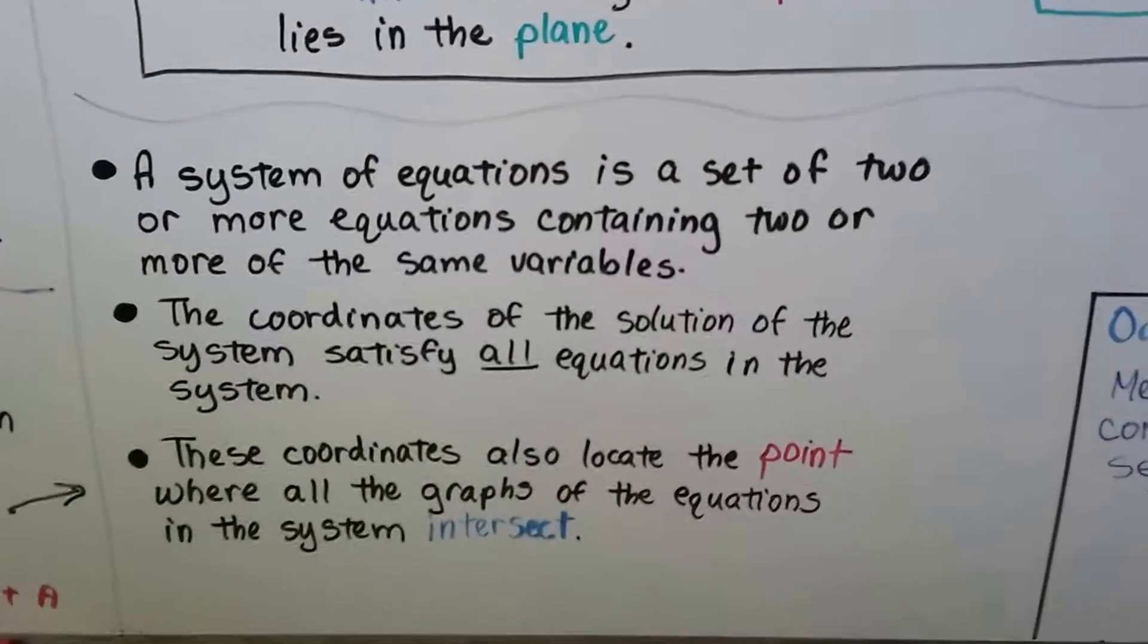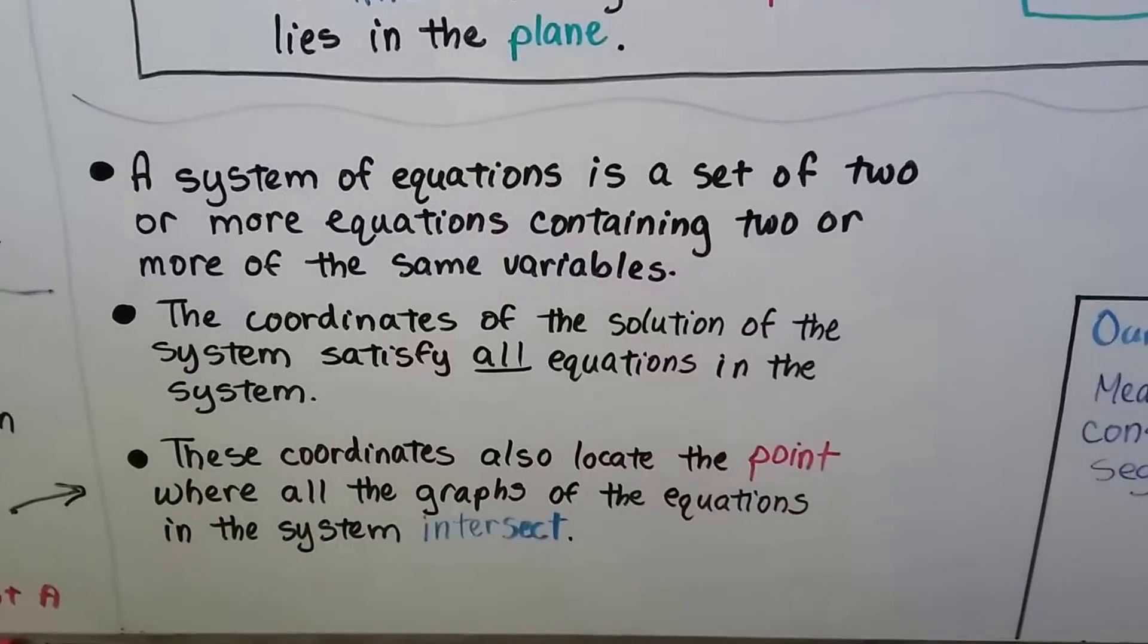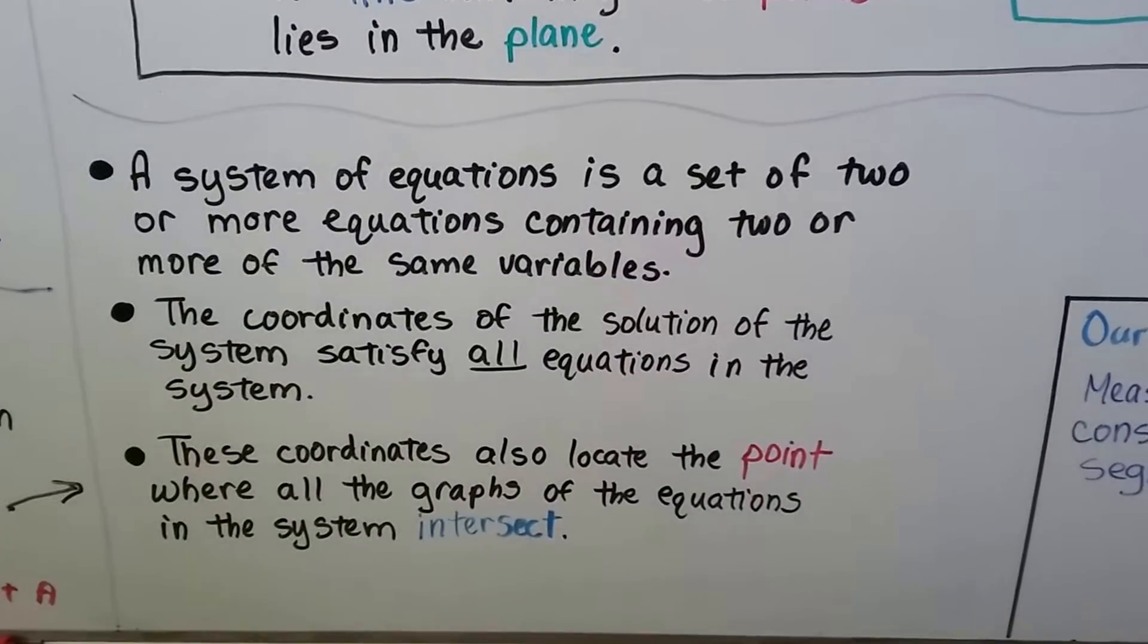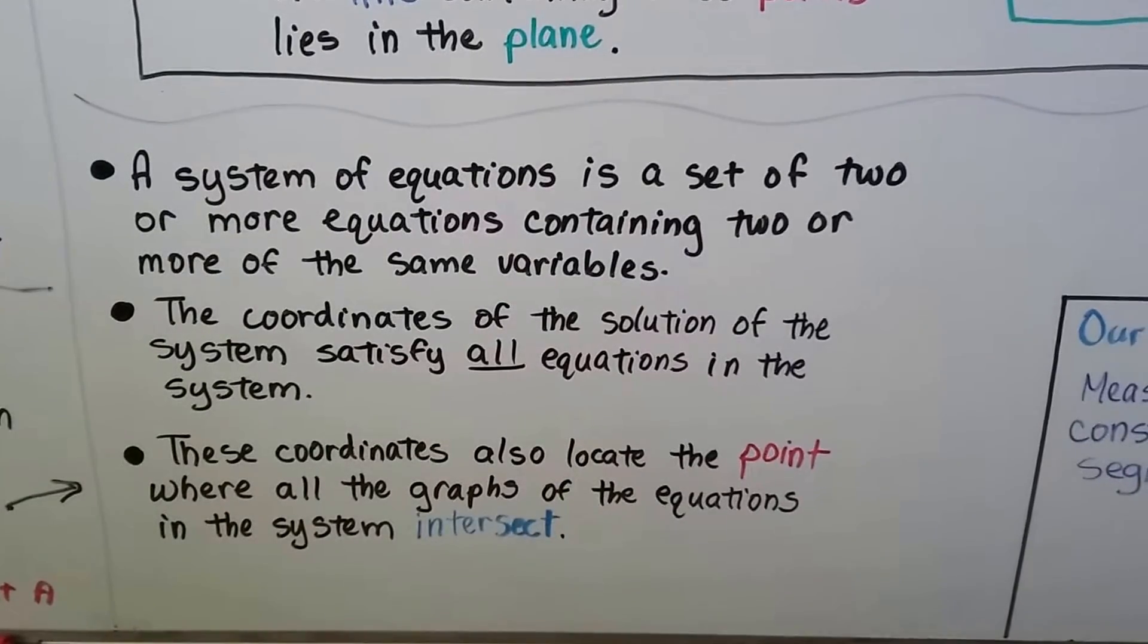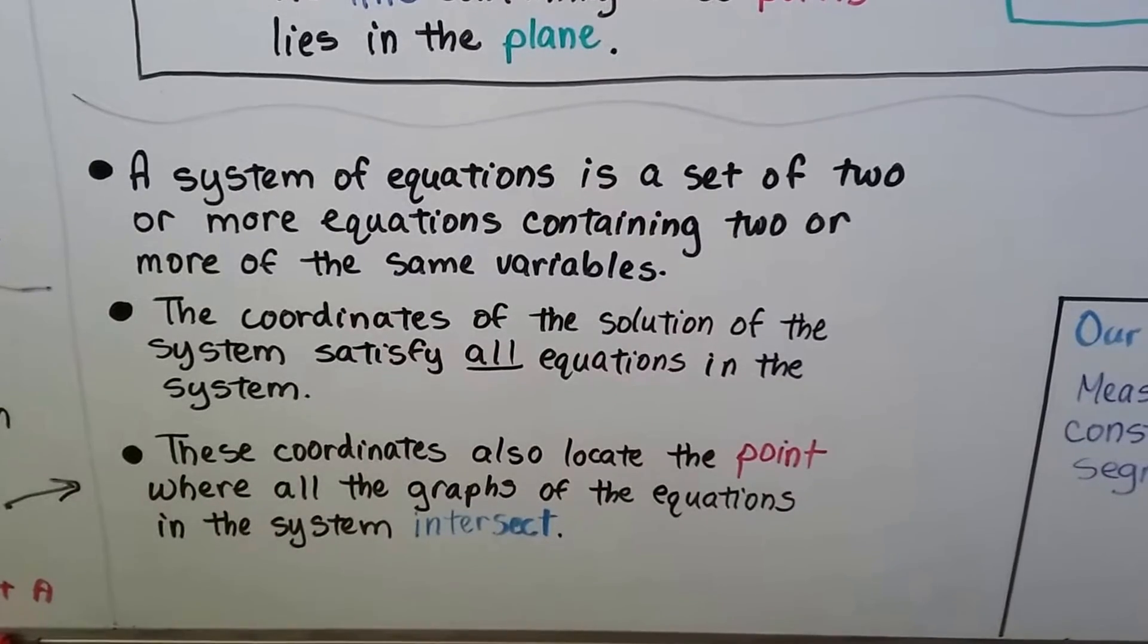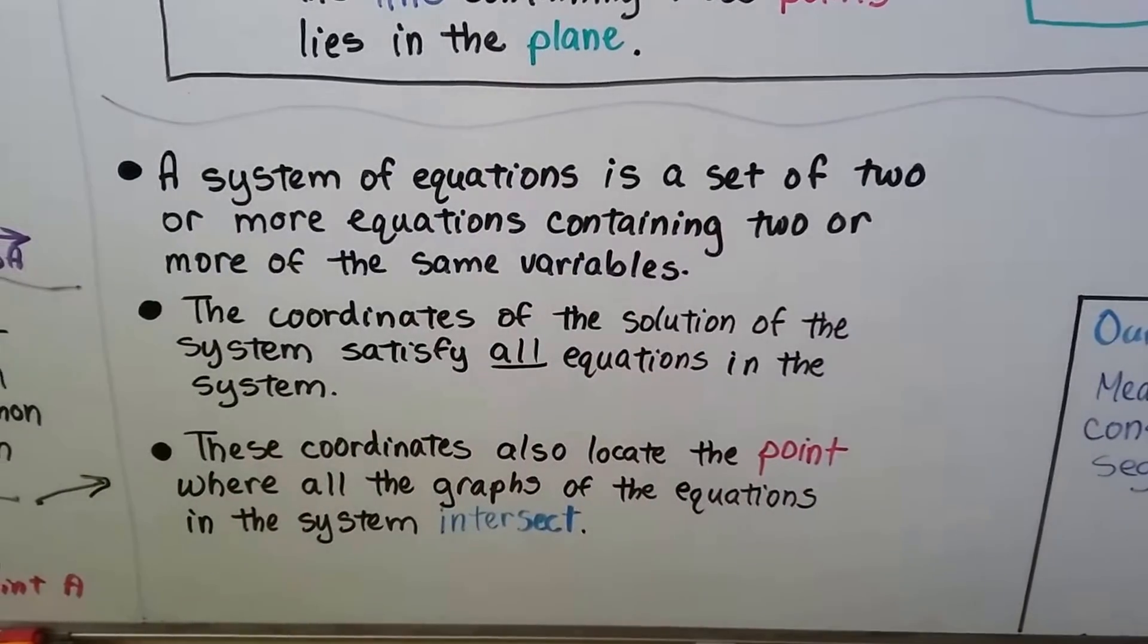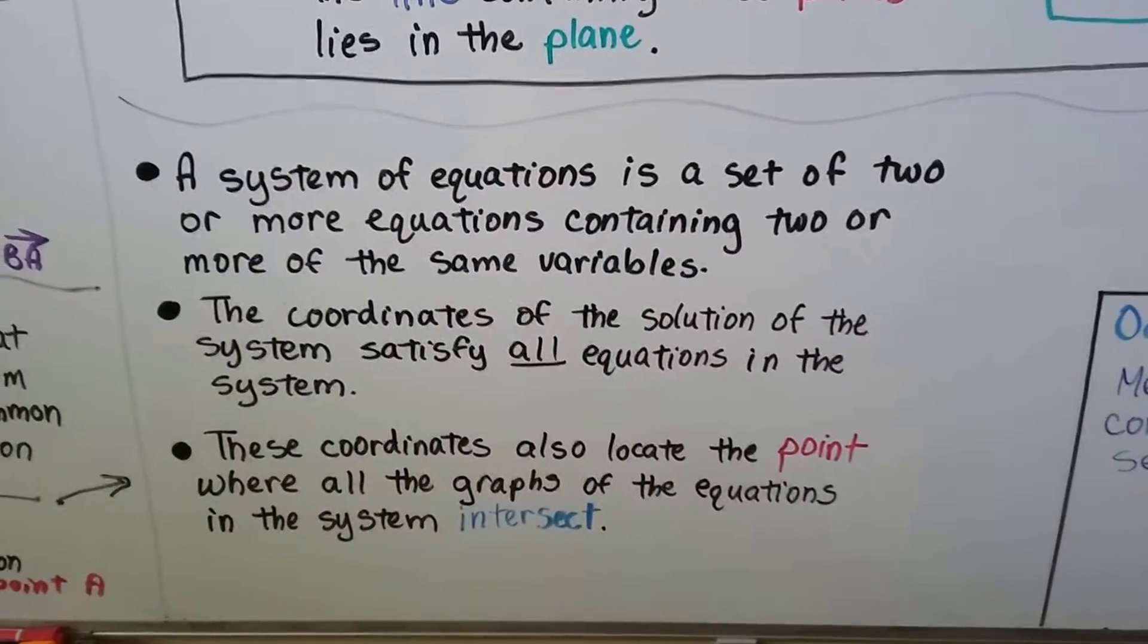A system of equations is a set of two or more equations containing two or more of the same variables. We learned about systems of equations in Algebra 1. And the coordinates of the solution of the system satisfies all equations in the system. These coordinates also locate the point where all the graphs of the equations in the system intersect.